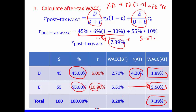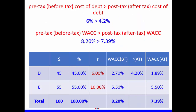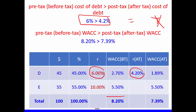Notice that our before-tax WACC is always larger than our after-tax WACC. This is because in the after-tax WACC calculation we use the after-tax cost of debt, which means we multiply cost of debt by (1 − T). Similarly, before-tax cost of debt is always larger than after-tax cost of debt. Both pairs would only be equal if there are no taxes.